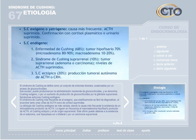Etiología. El síndrome de Cushing se define como un conjunto de síntomas diversos ocasionados por un exceso de glucocorticoides. Ese exceso puede producirse por la administración mantenida de glucocorticoides —denominándose Cushing exógeno—, o por un aumento de producción de glucocorticoides por la glándula suprarrenal. El Cushing más frecuente es el exógeno, analíticamente fácil de diagnosticar al encontrar cifras de ACTH y cortisol suprimidas. La etiología del Cushing endógeno es más variada, siendo la causa más frecuente la existencia de un microadenoma productor de ACTH, seguido del macroadenoma hipofisario, el Cushing ectópico y el de origen suprarrenal.